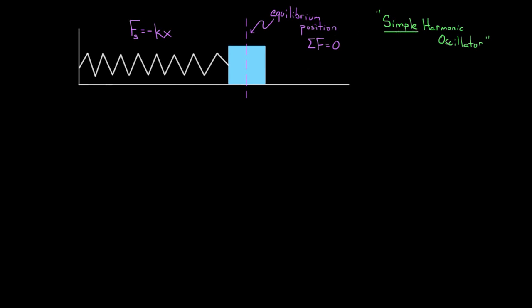We should talk about what we mean by 'simple.' It turns out these types of oscillators are described by sine and cosine functions. Think about what sine and cosine look like — sine oscillates back and forth, and cosine also oscillates back and forth starting at its peak. Those are very simple functions that oscillate, and in physics we love things described by sine and cosine. They're much easier to deal with mathematically than the alternatives.